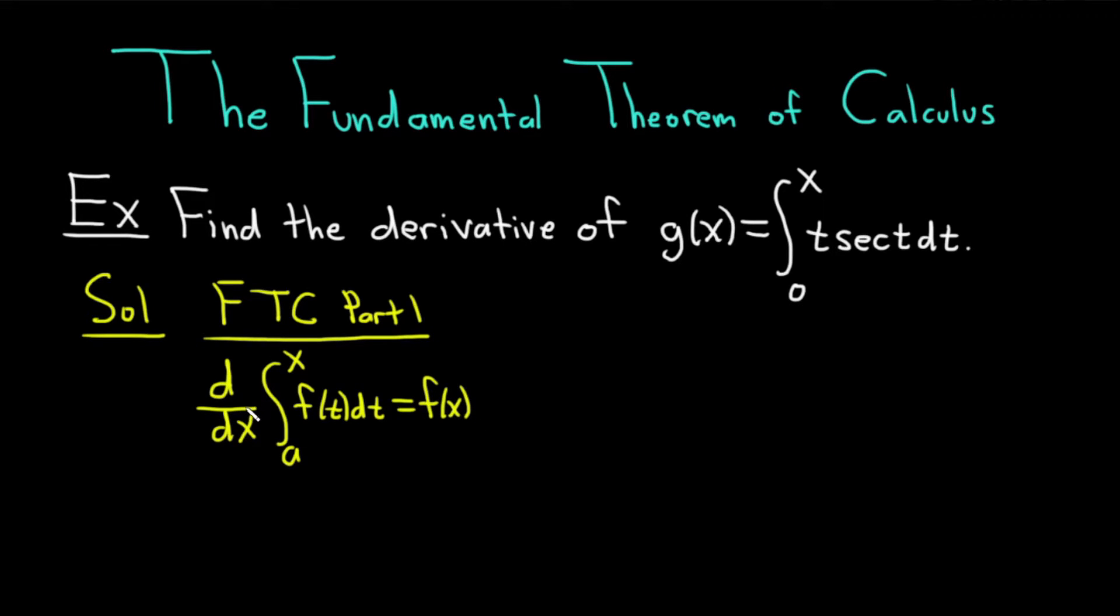Basically, you can differentiate an integral and you just get back the original function. In this particular case, our f(t) is t secant t. That's our f(t).